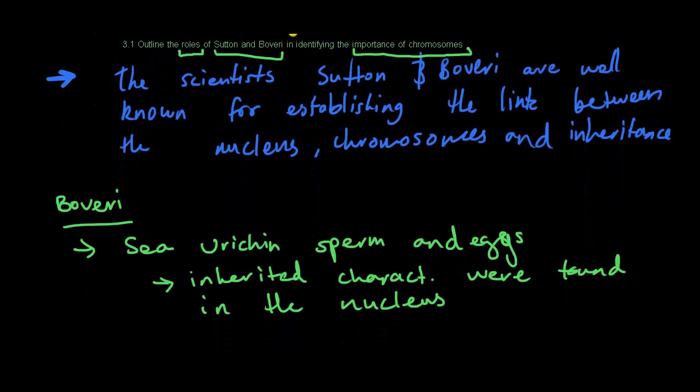So first off, we'll start with Boveri. What Boveri did is that he was able to study sea urchin sperm and eggs, and by studying these sea urchin sperm and eggs, he was able to come to a conclusion that inherited characteristics were found in the nucleus.